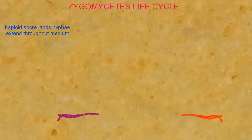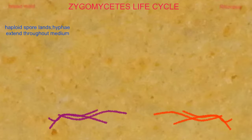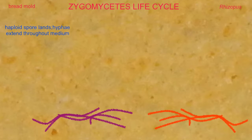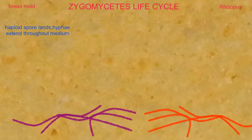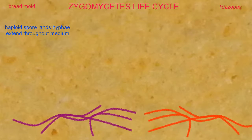The life cycle of a fungus in the phylum Zygomycota can be exemplified with the bread mold Rhizopus. The life cycle begins when a haploid spore lands in a suitable medium, and thread-like hyphae then extend throughout the medium, forming a mat known as a mycelium.